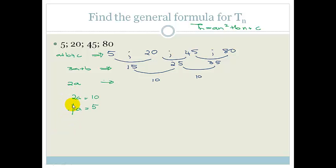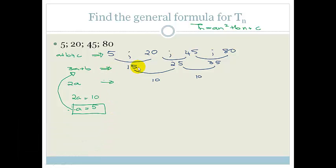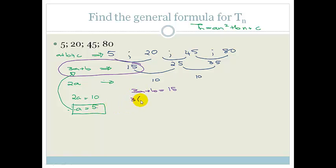We can now substitute a into the first difference equation. We have 3a plus b equals 15. Since a is 5, we get 3 times 5 plus b equals 15, so 15 plus b equals 15, therefore b equals 0. Don't freak out if you get a zero — it's not wrong.